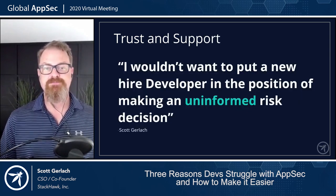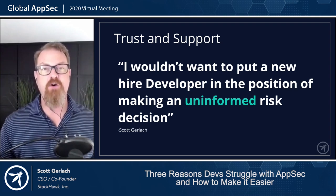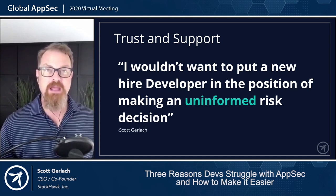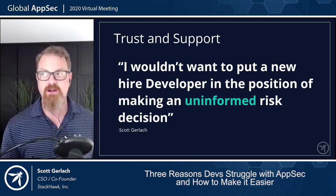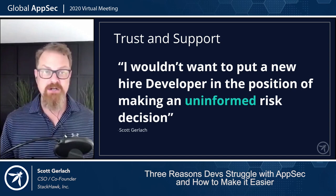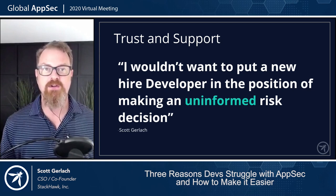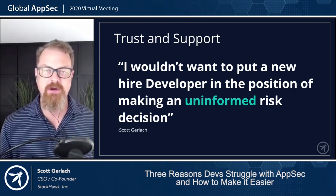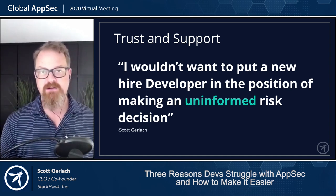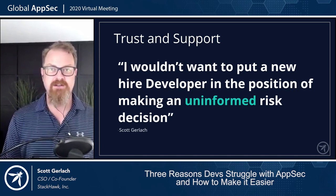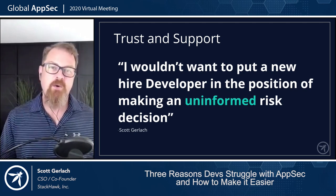I like to think of it more like this: I wouldn't want to put a new hire developer in the position of making an uninformed risk decision. When they're making risk decisions, they're collaborating with their peer groups — other engineers that have been there a while — asking what's a smart way to do this. What doesn't happen is they don't go grab the security team and ask how they should do it, because the answer is often just 'no, you shouldn't do that.' And that's just not the right answer.